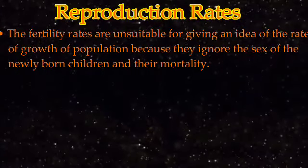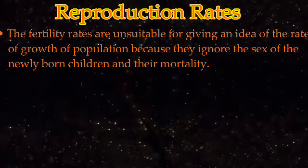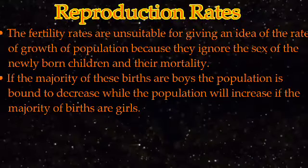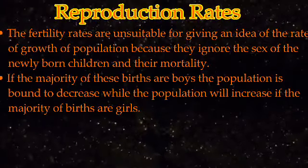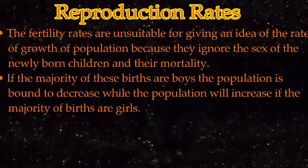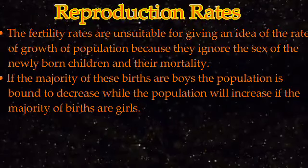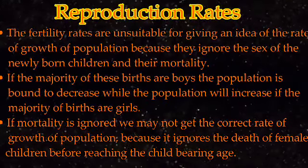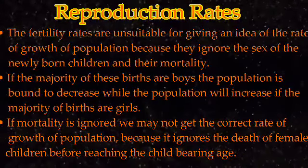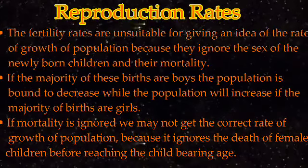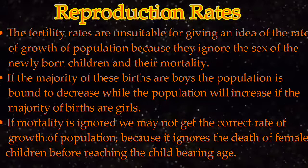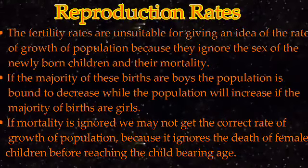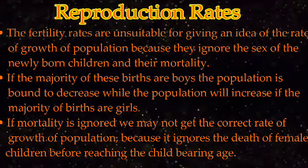Based on both birth and death rates, one can decide whether the population is increasing, decreasing, or remains constant. If the majority of births are girls, the population will increase; if the newborn baby is a male child the population rate will decrease. If mortality is ignored we may not get the correct rate of growth of population, because both birth and death occur simultaneously.